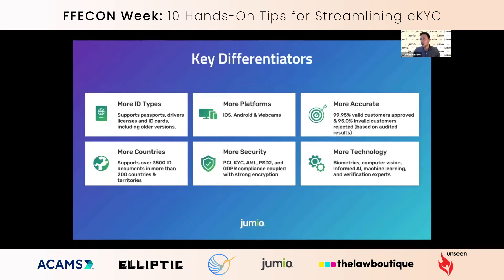Where are we differentiated? We have more ID types, we run on more platforms, and we are more accurate. On audited results based on third parties, we are 99.95% for valid customer approvals, and 95% of invalid customers are rejected. We support more countries, more IDs, more geographies — we're not just a European company, we are global with large operations in America, APAC, LATAM, Africa, and the Middle East. Companies choose Jumio when they want to scale, grow, and trust us to provide international-grade service.